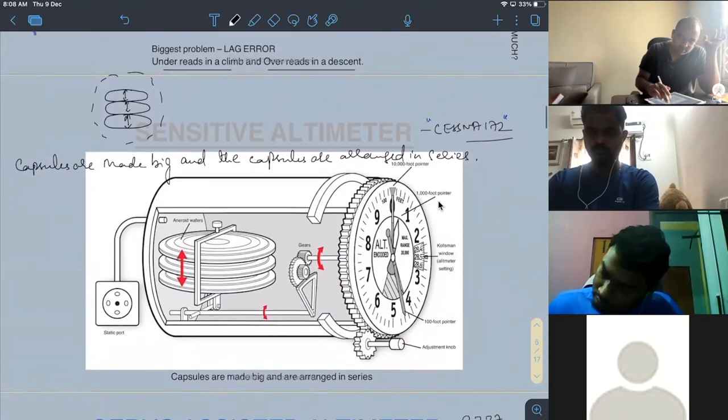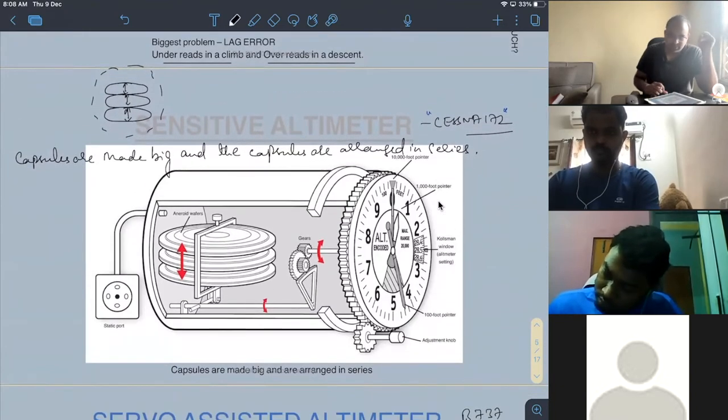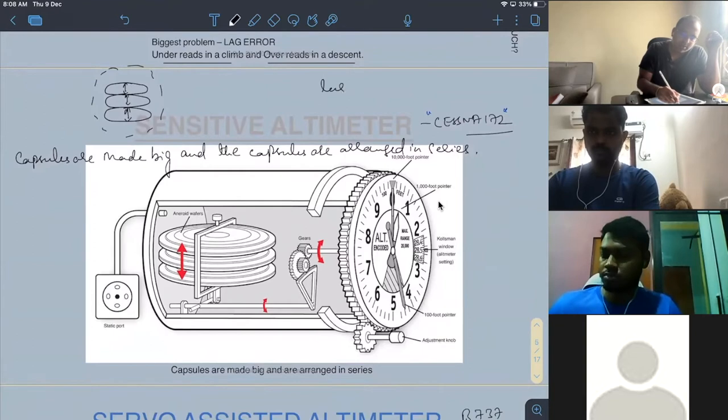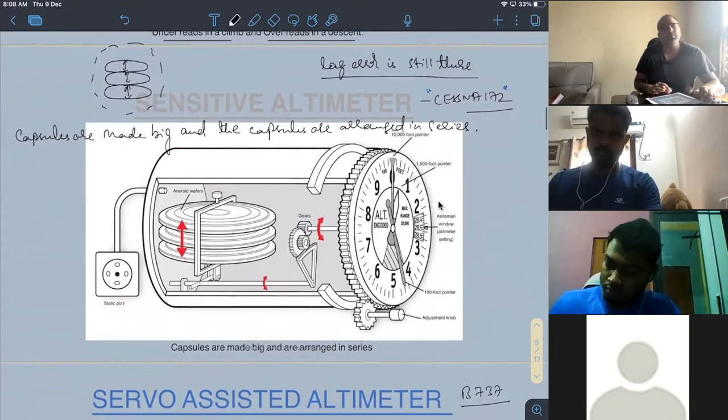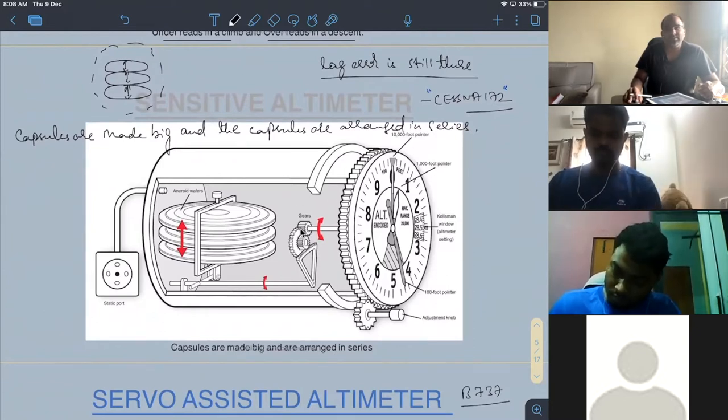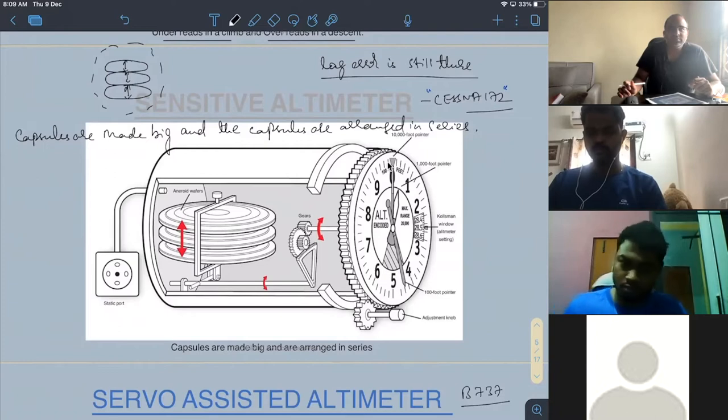Now, this is used in Cessna 172, but lag error is still there because this does not solve the problem. They still have to move all the linkages and gears physically. Now, can this be used in an aircraft like A320 which climbs very fast? No.